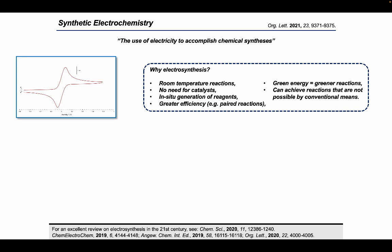Now, the question is, why do we choose to do electrosynthesis rather than using the traditional methods that we have at our disposal? Well, first things first, reactions can normally be conducted at room temperature. There's normally no need to use expensive and potentially toxic transition metal catalysts. You can generate some of your reagents in situ, which means you don't have to handle them, which is ideal if they're particularly hazardous. You also have the opportunity for greater efficiency, such as paired reactions. If you're using a source of green energy, then your reactions are inherently greener. And you can also achieve reactions that are not possible by conventional means.